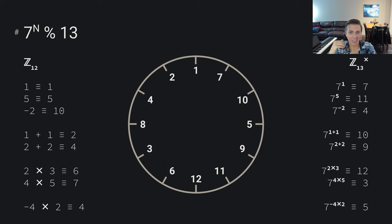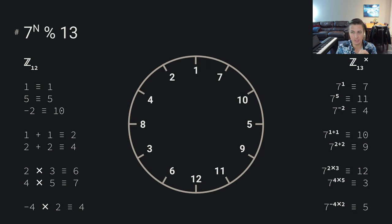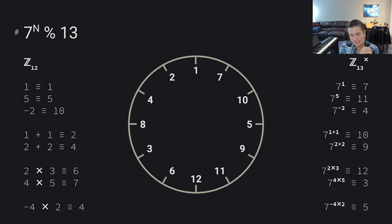The important thing to realize is that math works within this non-standard system, and furthermore we have this other property where it's hard to predict and go backwards. For example, if I tell you I'm looking at the number 11 — and we know that 7 to the 5 is 11 — it's actually very difficult in the general case to know that 11 corresponds to the exponent 5. It's very quick to say 5 corresponds to 11, but it's difficult to go backwards. In the general case, you'd have to compute 7 to the 1, 7 to the 2, 7 to the 3, and so on until you find the exponent that gives 11. This is known as the discrete logarithm problem.